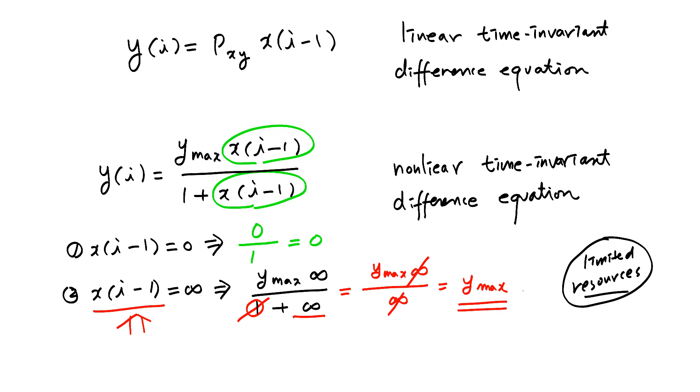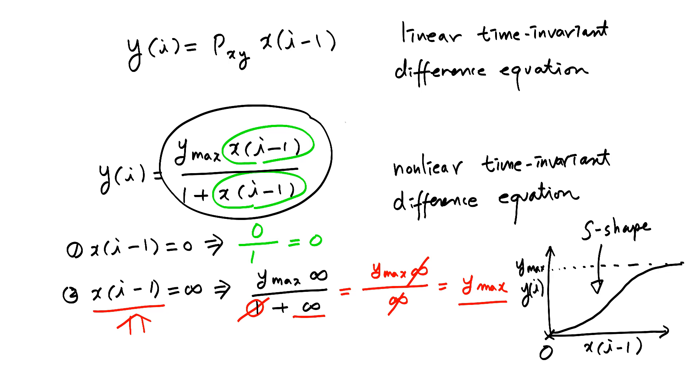So Y protein concentration cannot increase indefinitely. If you draw the plot that shows the relationship between X of I minus 1 and Y of I, when this is 0, we have 0 here, right? And when X of I minus 1 is very large, we reach this value, which is Y max. It will be something like this. And this shape is S shape, and this function is actually called a Hill function.